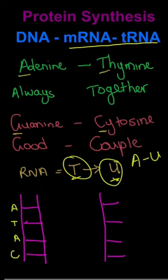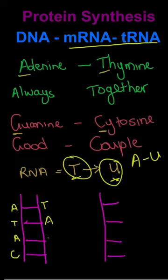If we look at a DNA strand, it's a double strand; with RNA, it is a single strand. So going from DNA: adenine will become thymine, thymine will become adenine, cytosine will become guanine.